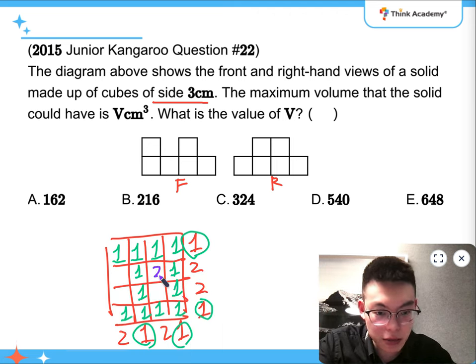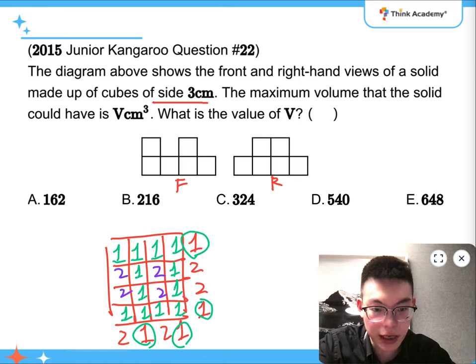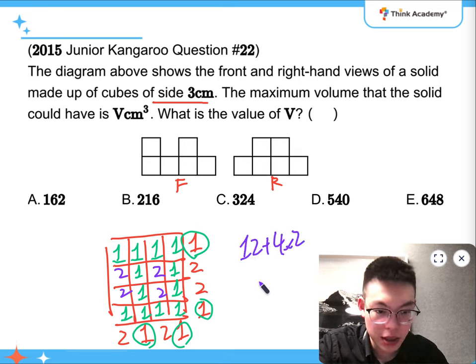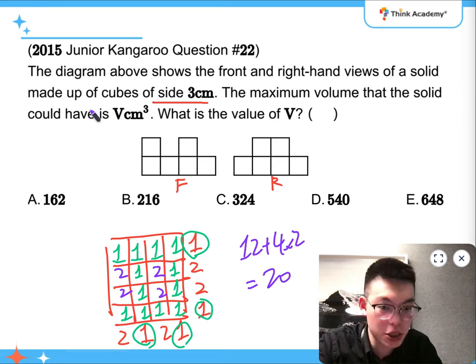for the remaining ones, the maximum are 2, so we are just filling the 2s down. So all together, we have 12 of the 1s and 4 of the 2s. So 12 adding 4 times 2, that's going to be 20 cubes altogether.